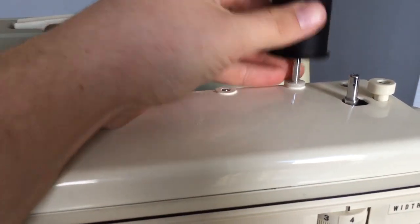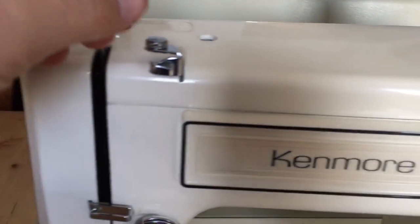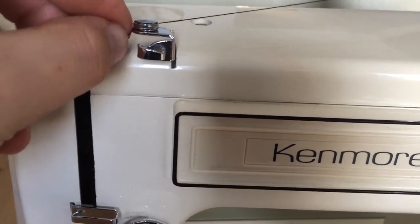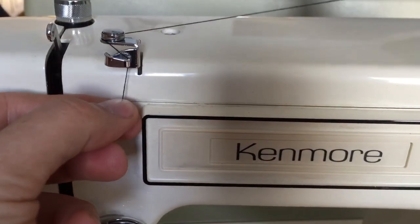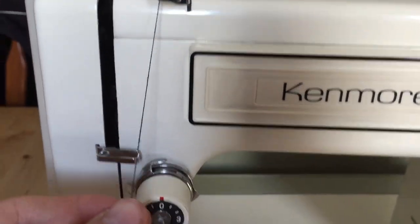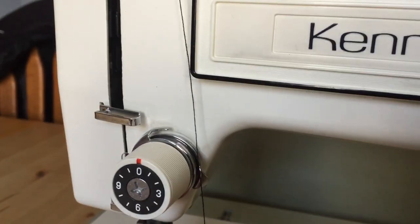First things first, we're going to put our thread on our post and then we're going to go to this little disc here. We're going to go around and through this hook, then these two silver plates, we're going to go between them.